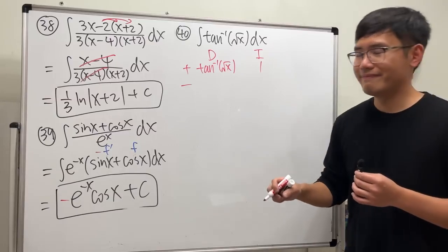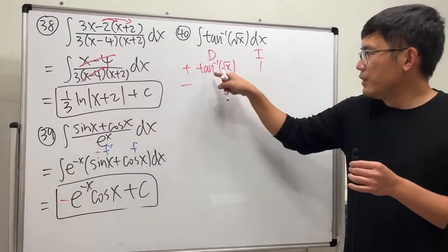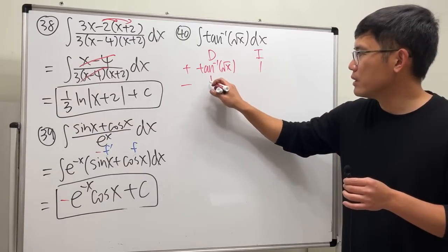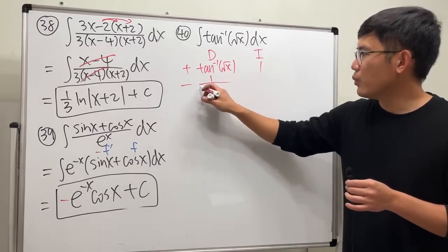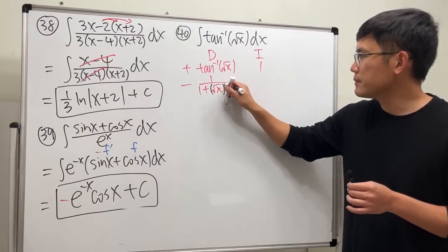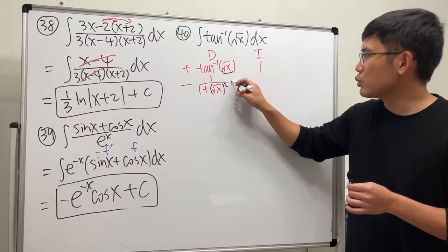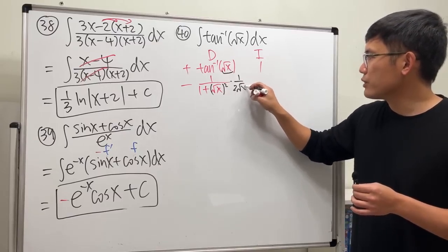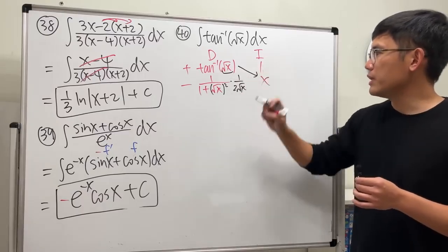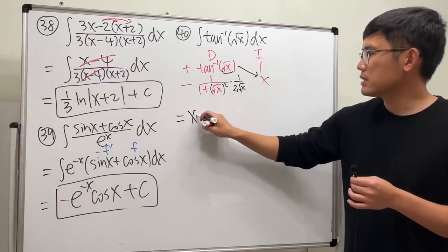And integrate one. Differentiating this right here, we get one over one plus square root of x, and then we square that. Don't forget the chain rule multiplied by the derivative, which is one over two square root of x. And then integrate this with x. So first part of the answer, we get x times inverse tangent of square root of x.